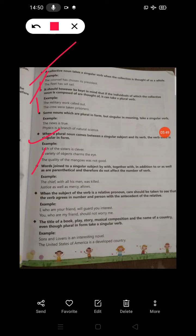Words joined to a singular subject by with, together with, in addition to, or as well as are parenthetical and therefore do not affect the number of the verb. Let's see examples.